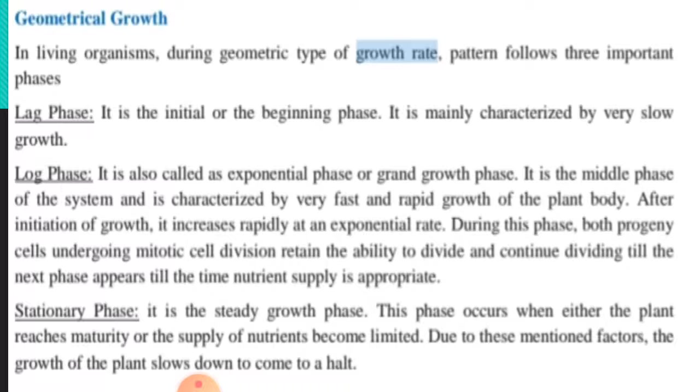Log phase is also called exponential phase or grand growth phase. It is the middle phase of the system and is characterized by very fast and rapid growth of the plant body. After initial growth, it increases rapidly at an exponential rate. During this phase, both progeny cells undergo mitotic cell division, retain the ability to divide and continue dividing until the next phase appears as long as the nutrient supply is appropriate.